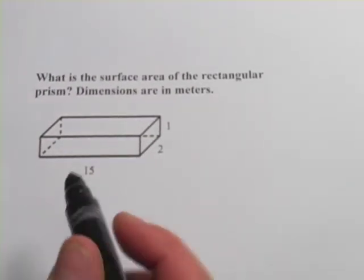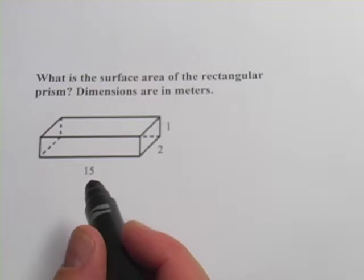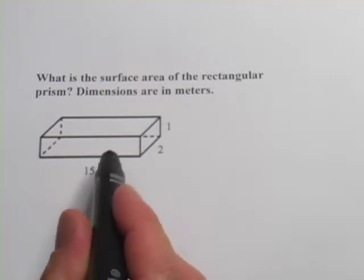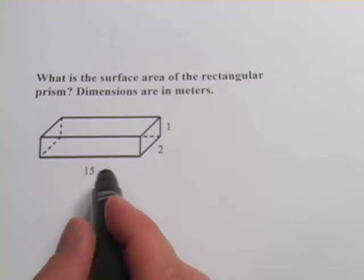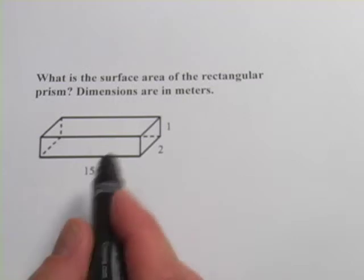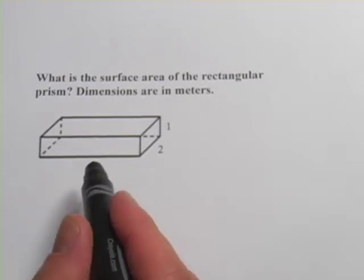This one is probably a little easier. It says, what is the surface area of the rectangular prism? Dimensions are in meters. Now the only thing to pay attention to here is to make sure you get all the sides. There are some that we can see and some that are sort of behind or underneath this box.